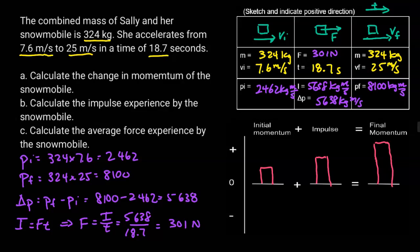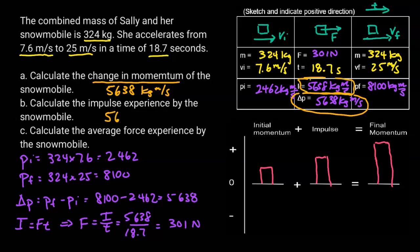The next step is to answer the question. Calculate the change in momentum — that will be 5,638 kilogram meters per second. Calculate the impulse experienced by the snowmobile — that's going to be the same number, because impulse equals change in momentum. Calculate the average force experienced by the snowmobile — that will be 301 Newtons.